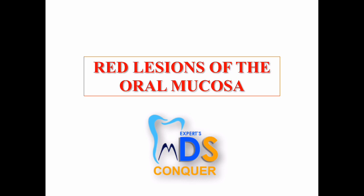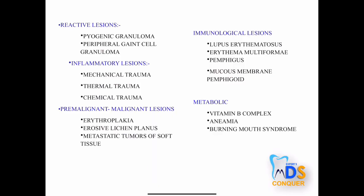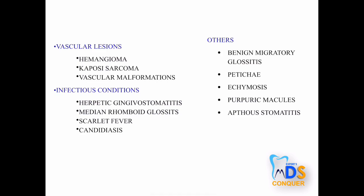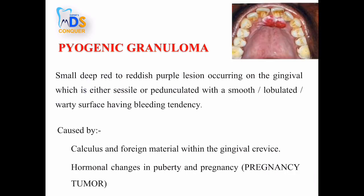Hello students, today I'm going to discuss red lesions of oral mucosa. I'm Dr. Saithi, MDS. Red lesions are broadly classified as reactive lesions, inflammatory lesions, pre-malignant and malignant lesions, immunological lesions, metabolic lesions, vascular lesions, and infectious conditions, among others.